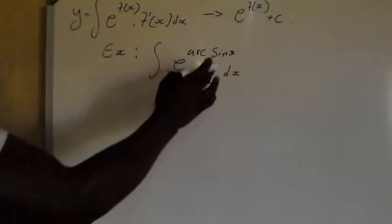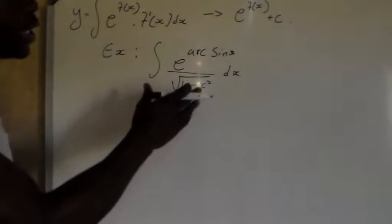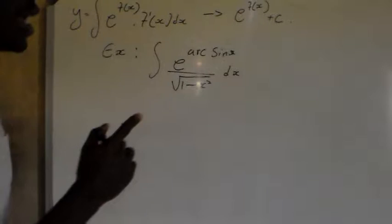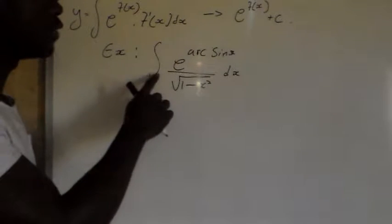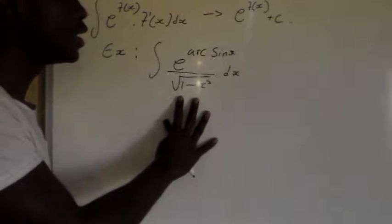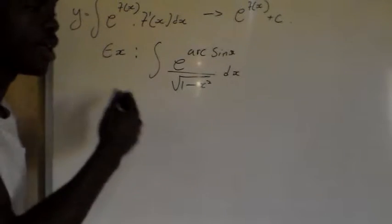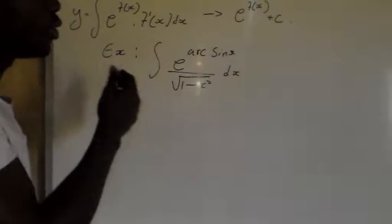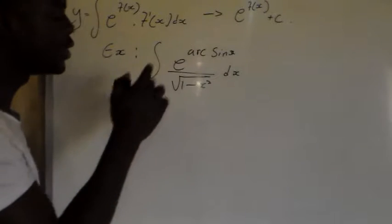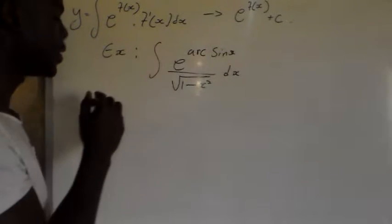Let's take one example. Integrate e to the power arcsin x divided by the square root of 1 minus x squared. So then if you check there, we're going to say let u equal to arcsin x.